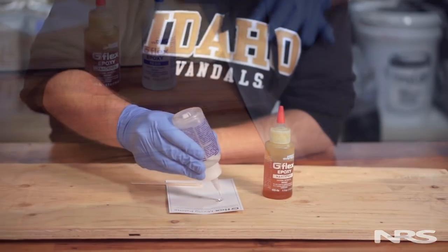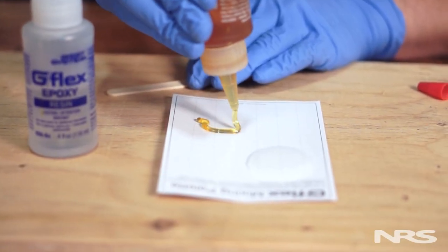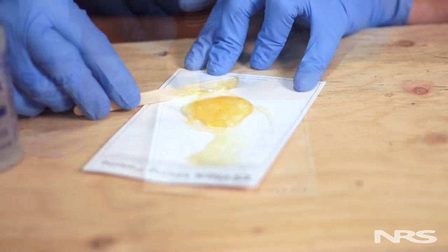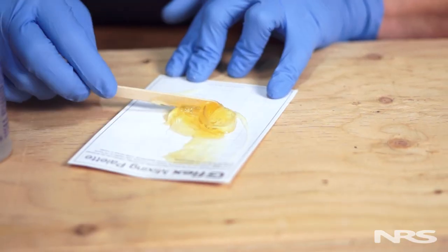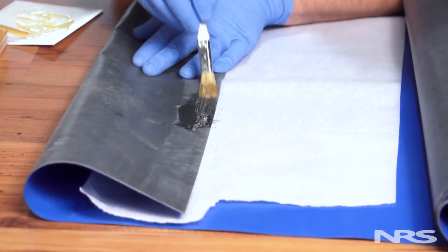Common situations where you may want to use this product include outfitting a Kevlar or fiberglass canoe, installing a transom in a rigid inflatable boat, or working with a roto-molded kayak. The instructions that come with G-Flex are very thorough and cover how to prep all types of materials.